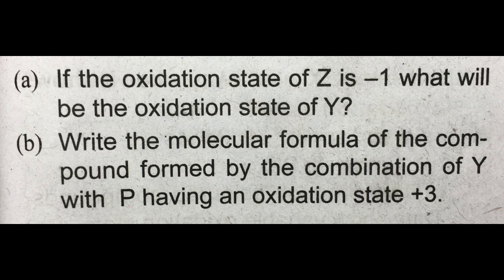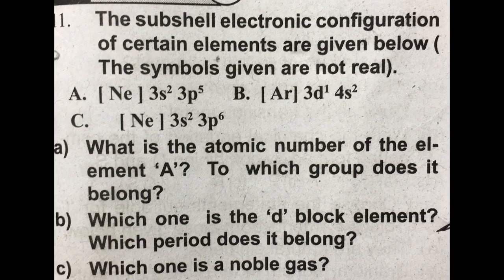You are given the compounds XY2 and XZ4. What will be the oxidation state of Y? Z has an oxidation state of minus 1. Y is the oxidation state to be found. With P having an oxidation state of 3, Y and P form a compound, and you determine the oxidation state of Y from there.